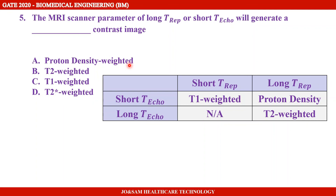The answer is proton density weighted. Note that in the question the condition uses 'OR' — if it said long TREP OR short TE, either condition alone also points toward proton density. In a GATE exam context, the answer is proton density weighted image.